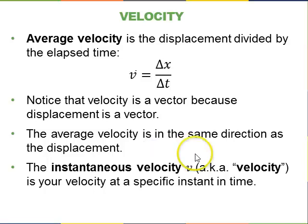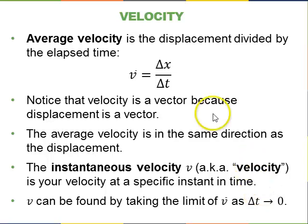And the instantaneous velocity, v, also known as velocity, is the velocity at any specific instant in time. And you can find that by taking the average velocity, but taking the limit as this delta t goes to zero.